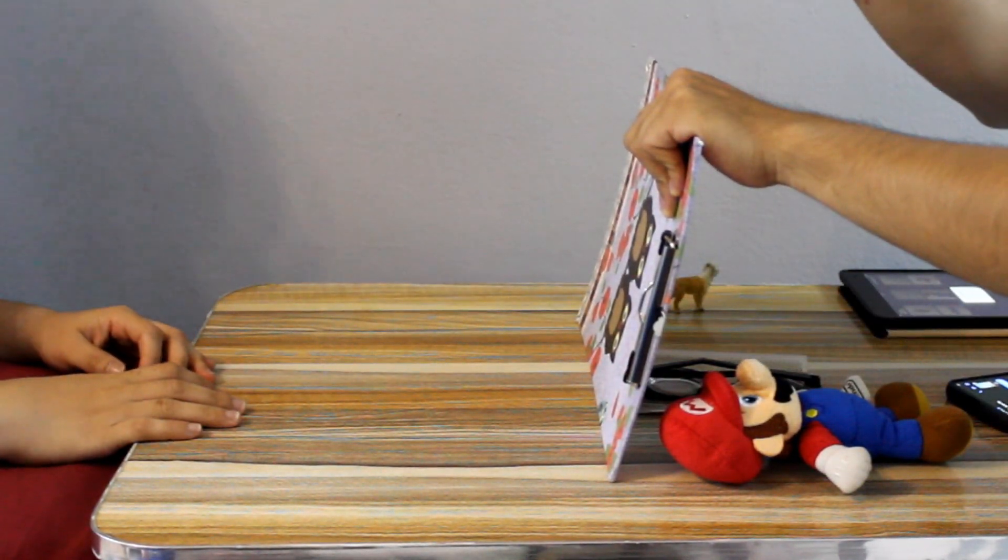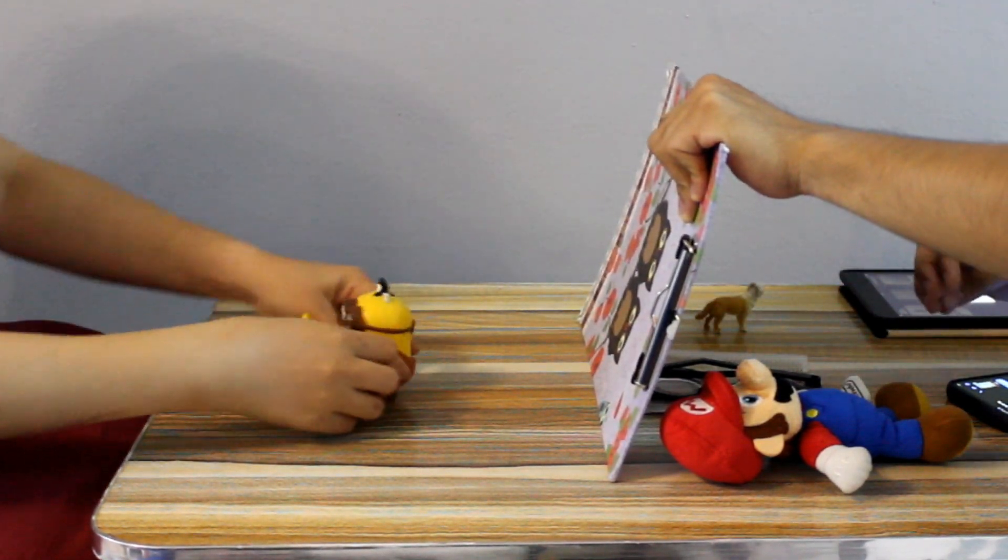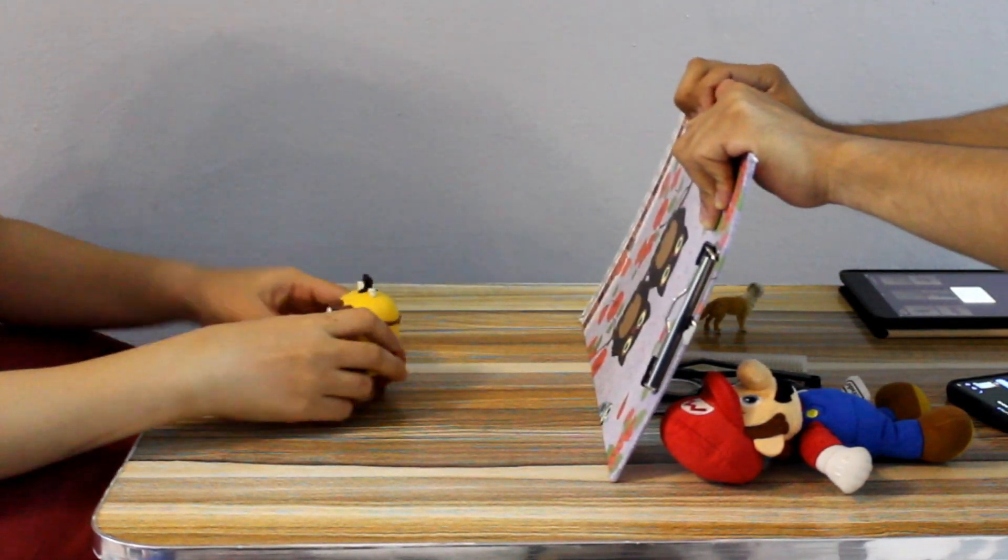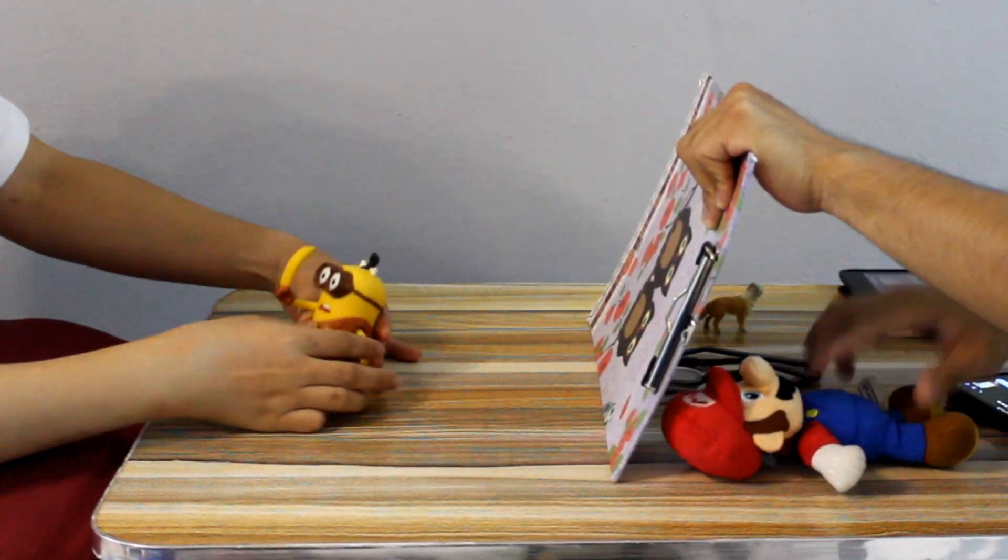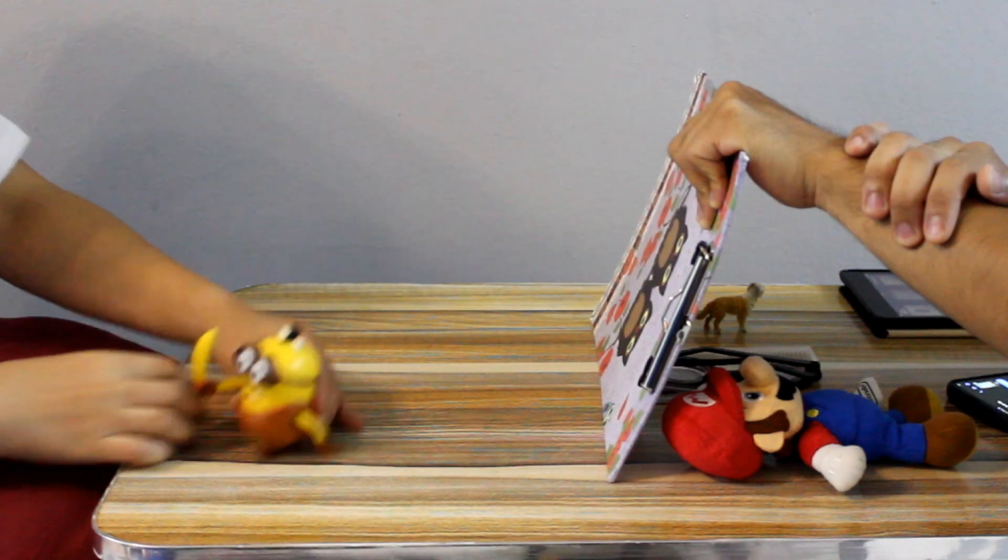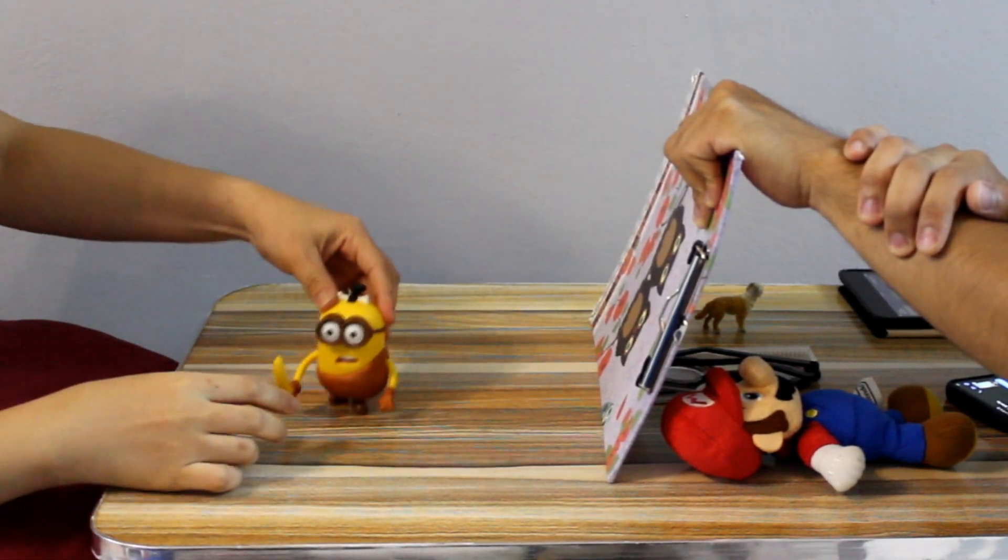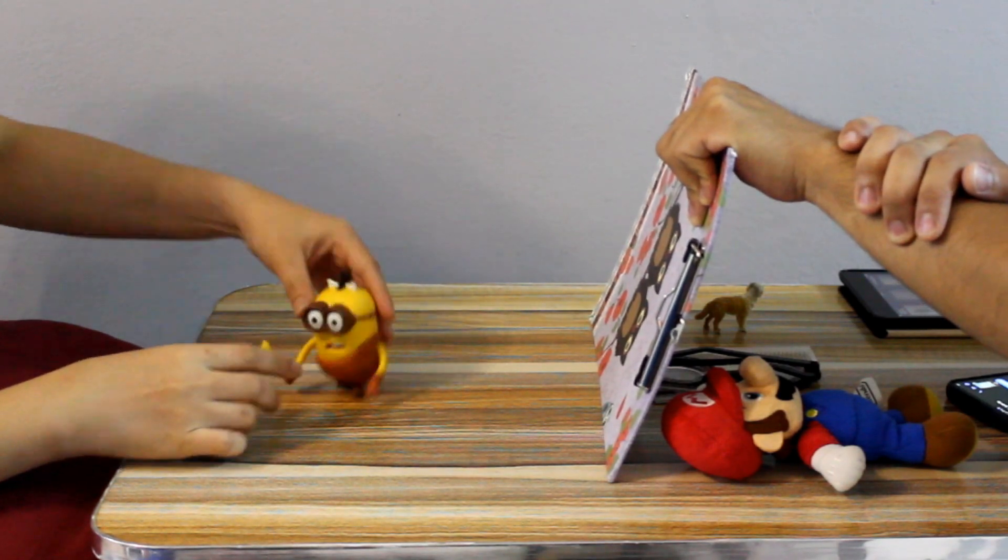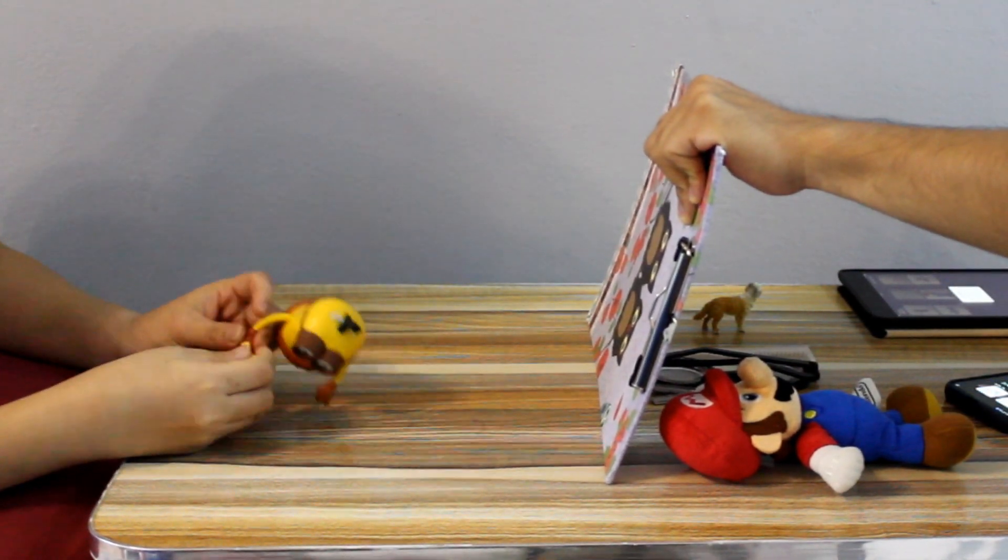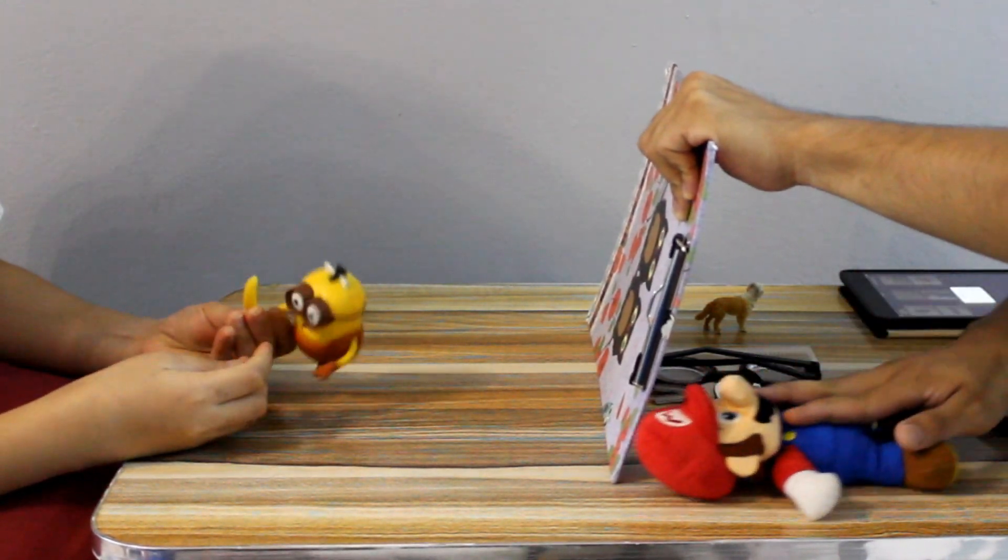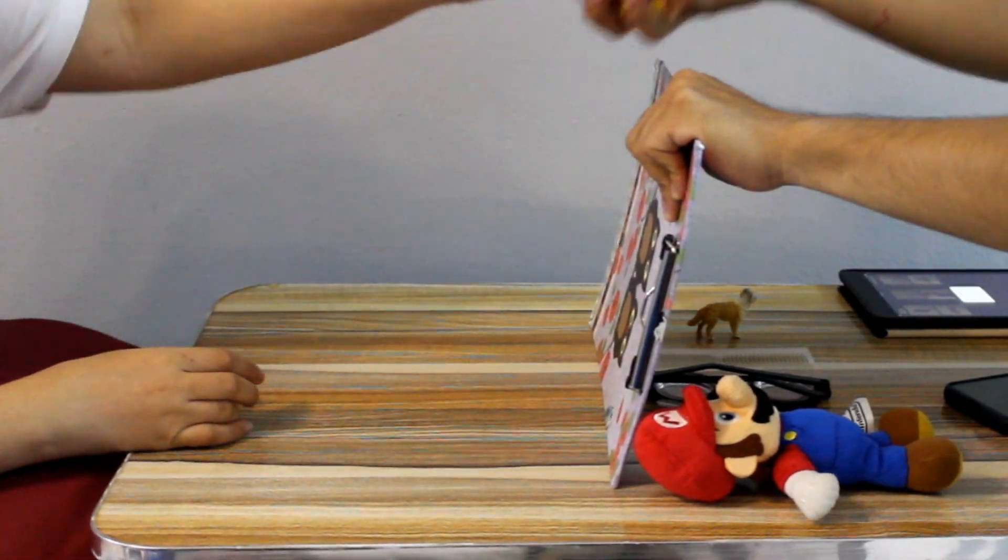Look what I have. Minions. Ba ba ba, ba ba na na. Ba ba ba, ba ba na na. It's a caveman minion. Over here, what is she doing? Letting her walk? Okay, my turn. Good job.